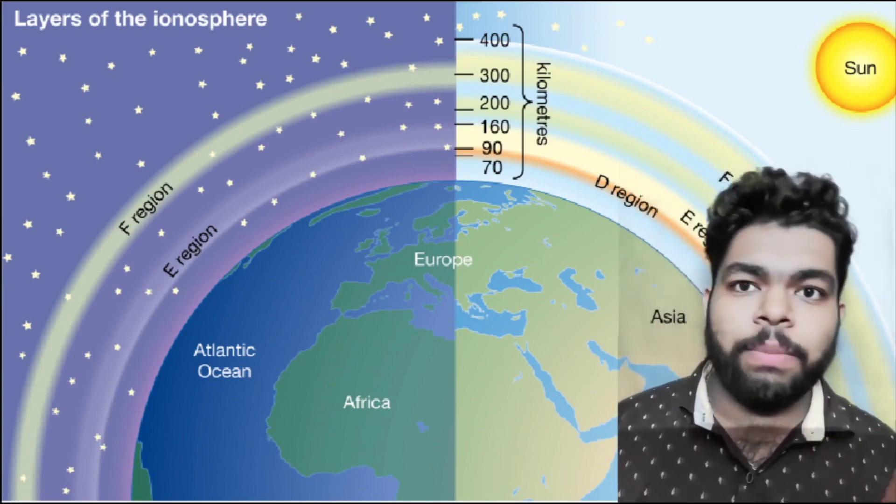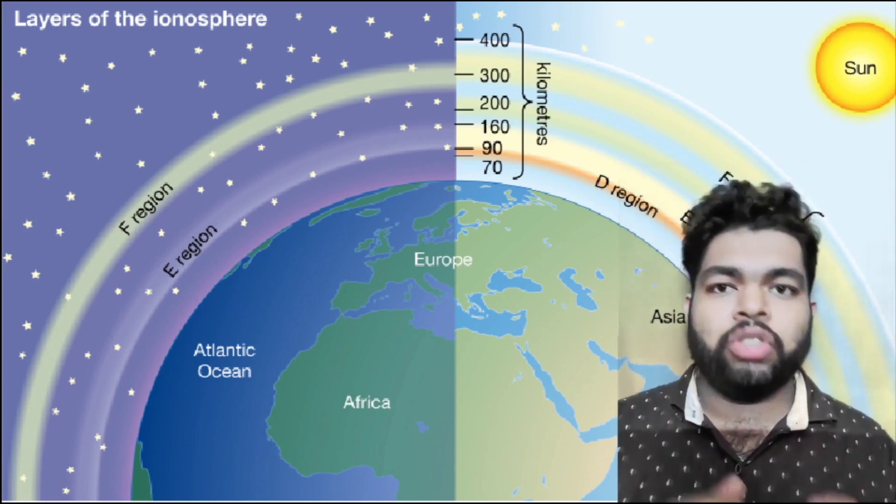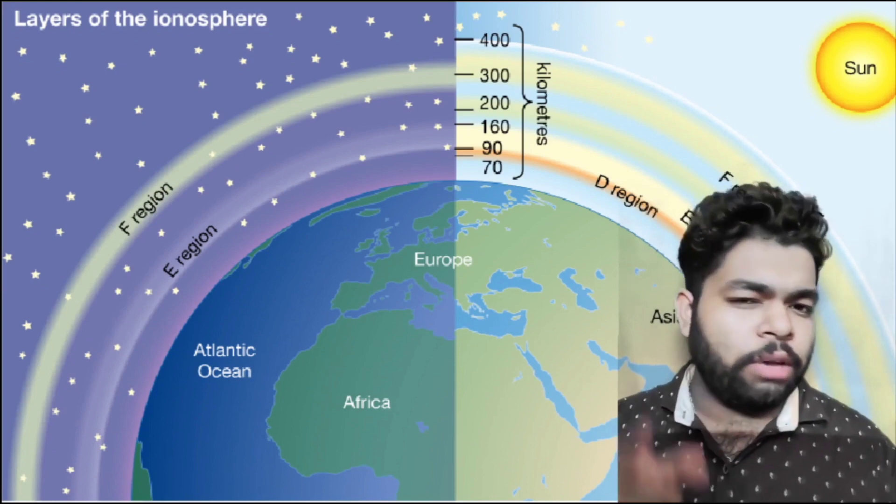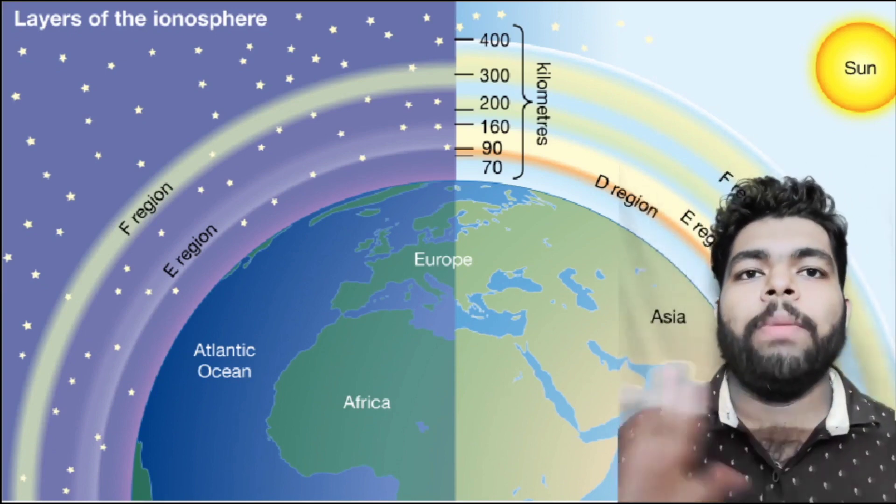The F2 layer is formed by the ionization of UV, X-rays, etc. It reflects high frequency waves, and the critical frequency of this layer is 5 to 12 megahertz.